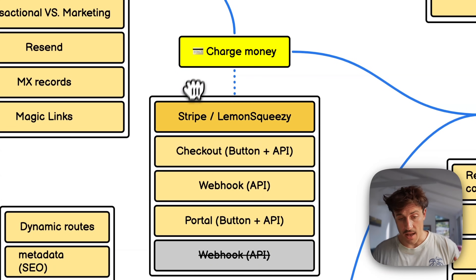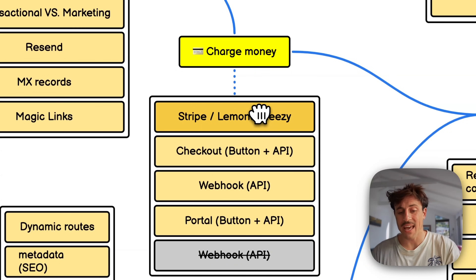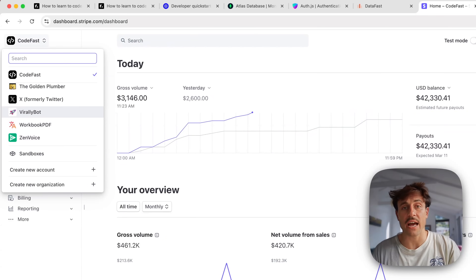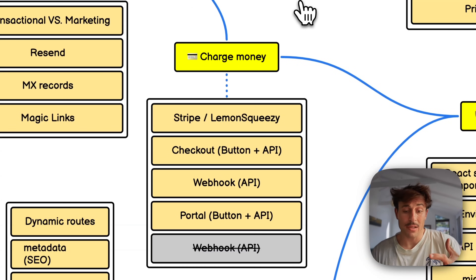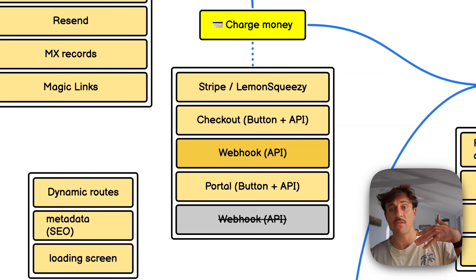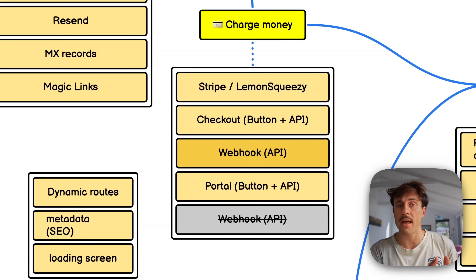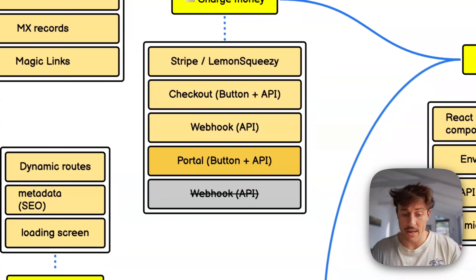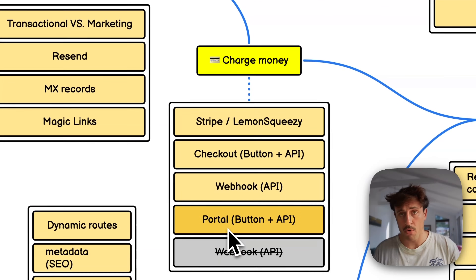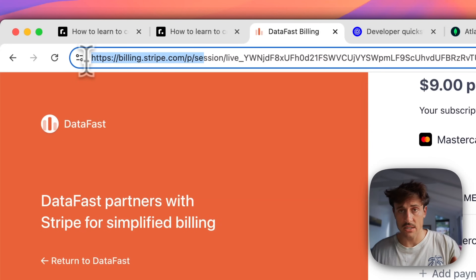For charging money online you need a payment provider. Two popular options are Stripe and Lemon Squeezy — if you're from India, you won't be able to use Stripe, so Lemon Squeezy is a good alternative; it also handles VAT automatically. I use Stripe and open a new account for each business. You'll learn to create a checkout session with a button that opens a payment page, handle Stripe webhooks (Stripe notifies your API endpoint when someone pays, so you can grant them access), and set up a customer portal where users manage their own billing.